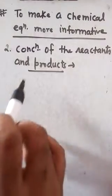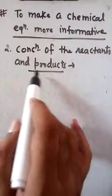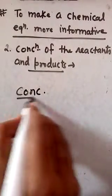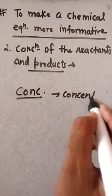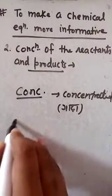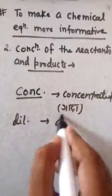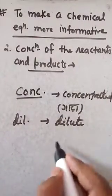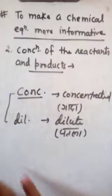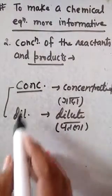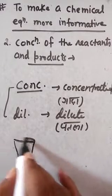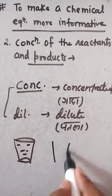The second point is concentration of reactants and products. We use 'conc' for concentrated solution and 'dil' for dilute solution. Concentrated means a higher amount of solute, while dilute means a lower or thinner concentration of solute.